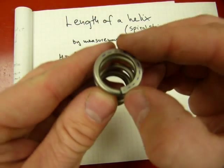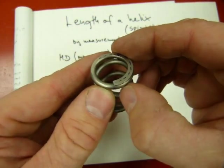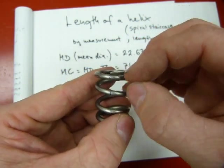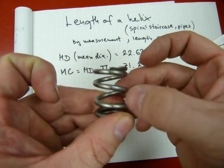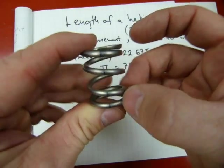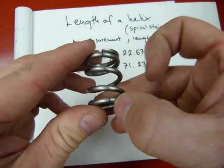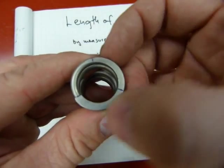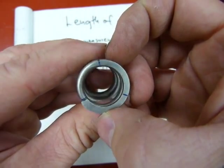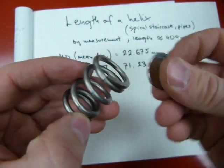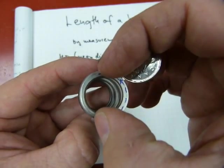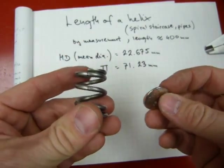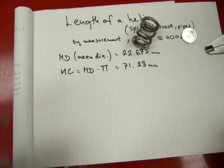And if we start counting here where the coil ends, there is circle one, there is circle or coil two, coil three, and turn four, and there's a little more to it. Four full turns and one third, two thirds, four and two thirds. So I'll calculate a circle with this mean circumference four and two thirds times. Let's do some math.